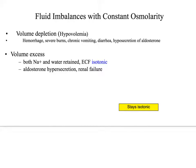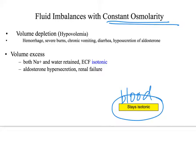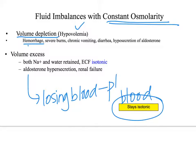Now, fluid imbalances with constant osmolarity — meaning the amount of solutes in the blood isn't changing and the blood stays isotonic. The first type is volume depletion, also called hypovolemia. Hypovolemia is caused by hemorrhaging — you're losing blood plasma and solutes together. You're not just losing water; you're losing everything that's in the blood too.